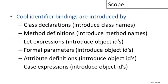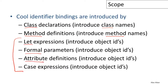In Cool, identifier bindings are introduced by a variety of mechanisms: class declarations introduce class names, method definitions introduce method names, and object identifiers are introduced by let expressions, formal parameters of functions, attribute definitions in classes, and branches of case expressions.